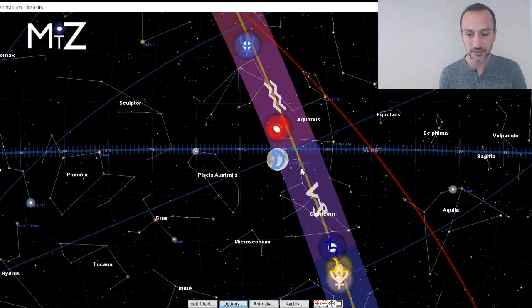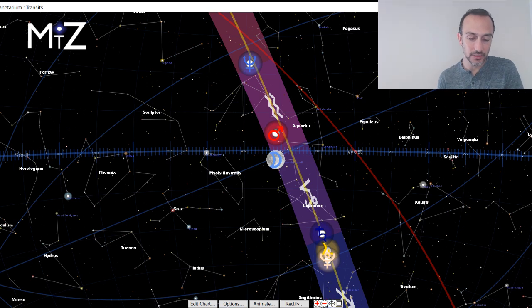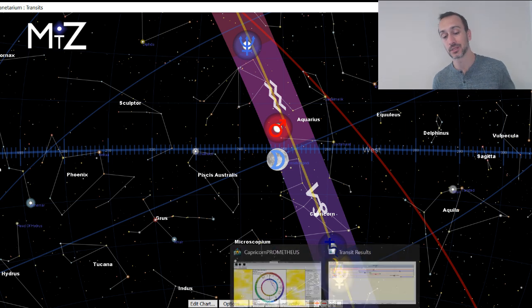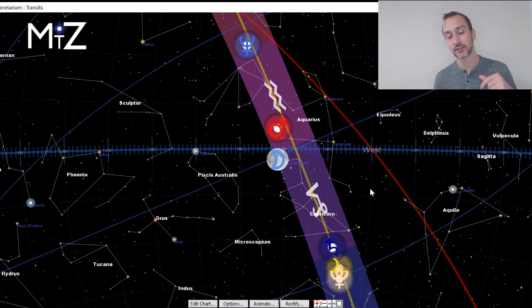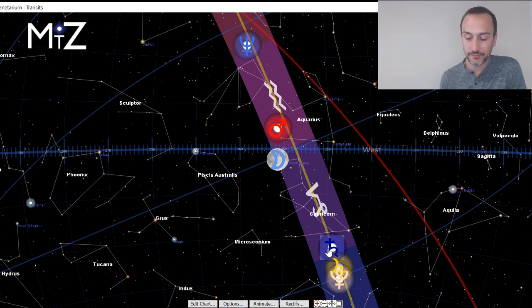Alright, so here is the sky for this Thursday. And again, we are using the actual visible sky on this channel, which is different from mainstream astrology, and the signs do change by sometimes up to two signs. So if you are new to the channel, definitely check out that link down below for more information on true sidereal astrology.